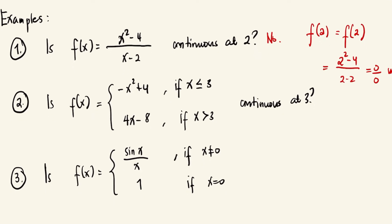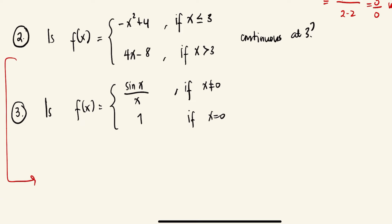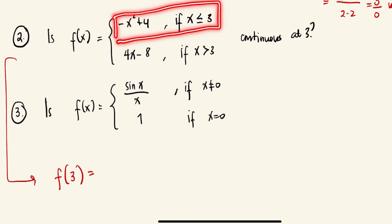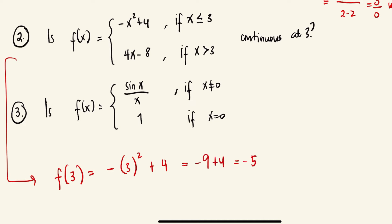For number two, is the piecewise function f(x) = −x² + 4 if x ≤ 3, and 4x − 8 if x > 3, continuous at x = 3? Let's begin by finding f(3). We select the first piece since x = 3 satisfies x ≤ 3, giving us −(3²) + 4 = −9 + 4 = −5. So f(3) = −5.